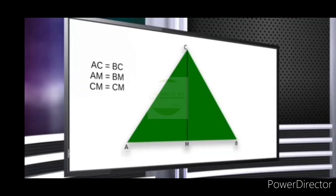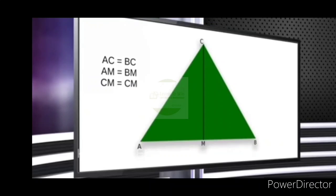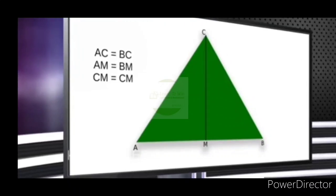What do we know about this triangle? We have points A, C, B, C. If CM is correct, the CM is equal to CM. What is the perpendicular bisector? If CM is correct, CM is equal to CM, and the angle will be 90 degrees. That angle is 90 degrees.